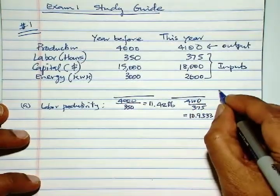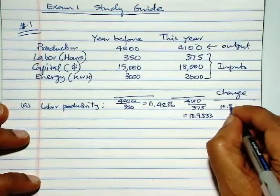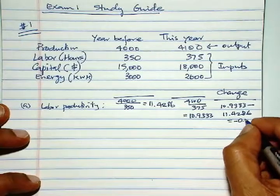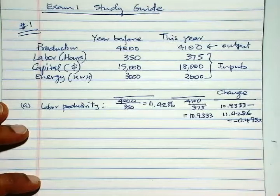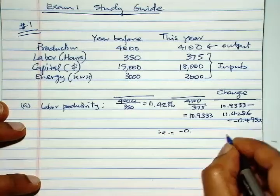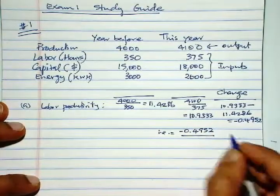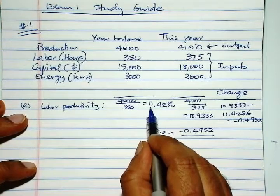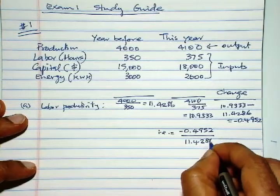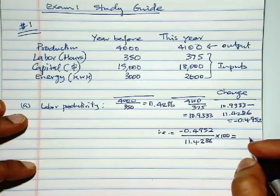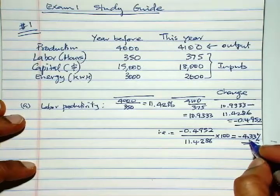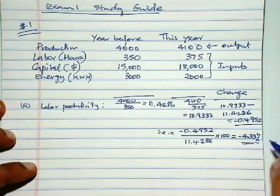Then we have the change: 10.9333 minus 11.4286 gives minus 0.4952, and we have to express that as a percentage. That is minus 0.4952 divided by the original productivity of 11.4286, multiplied by 100. So the change in productivity is minus 4.33%, meaning productivity has gone down.